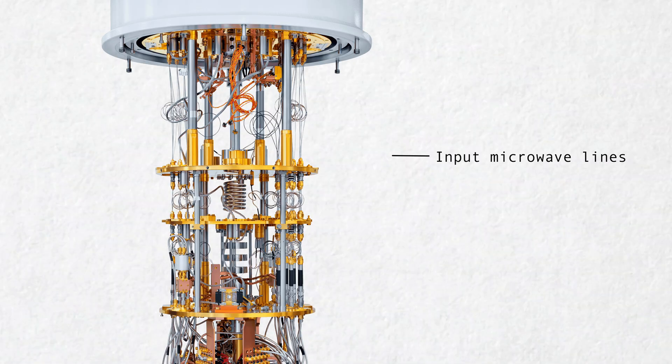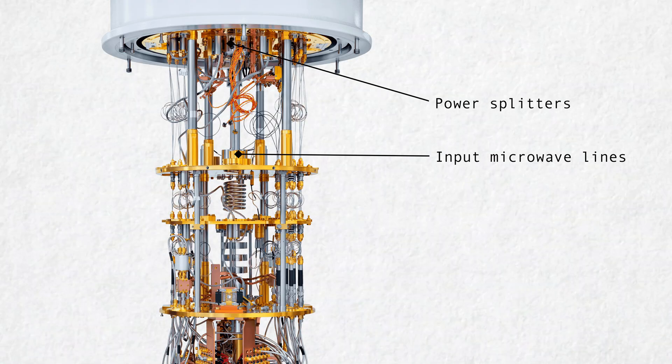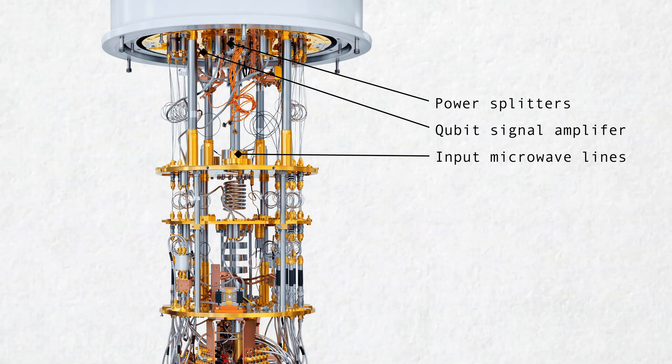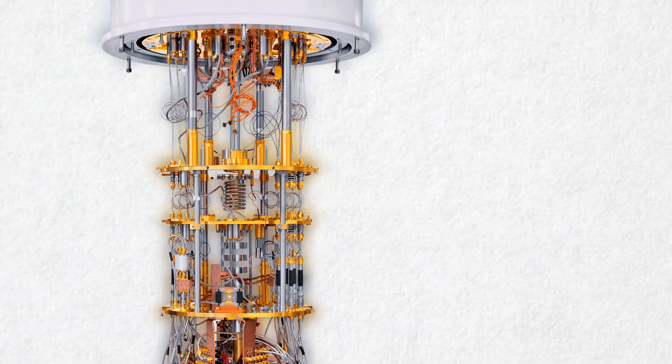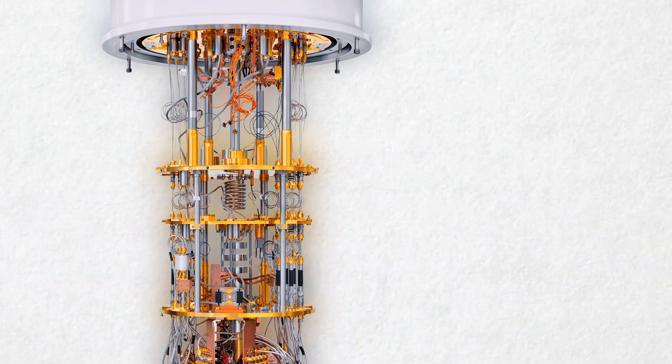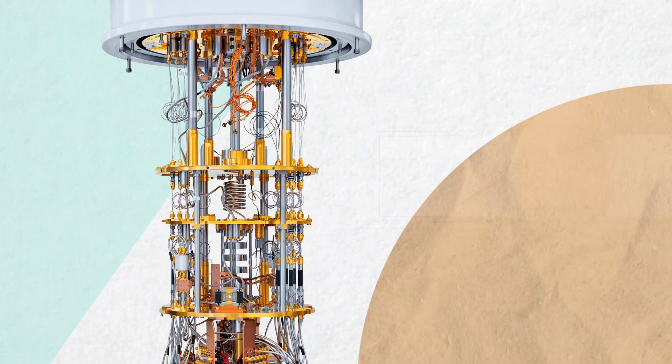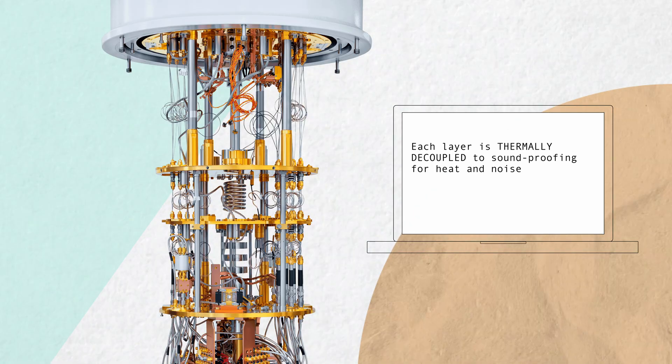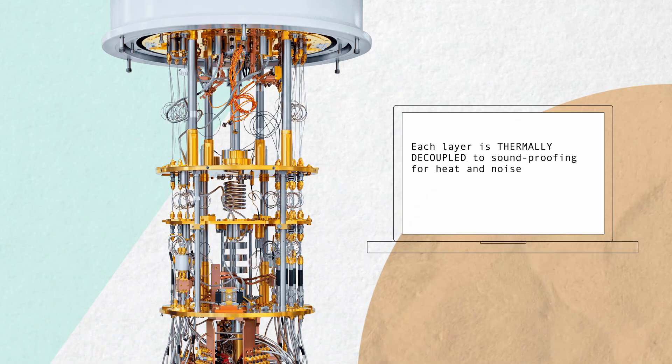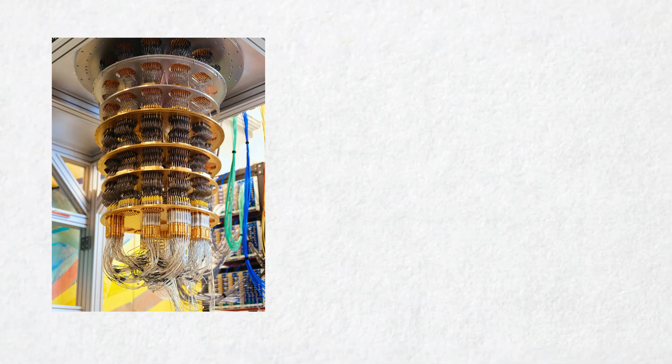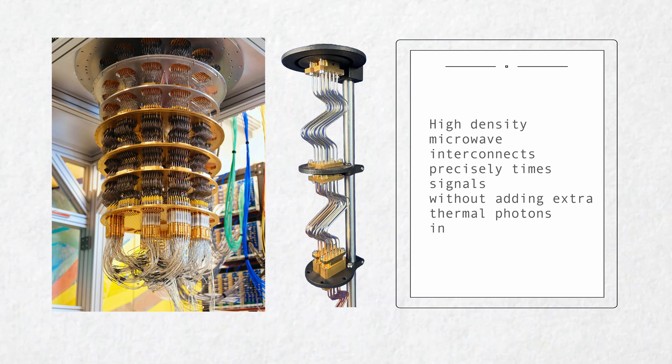Here you'll find microwave sources, power splitters, and the first amplifiers that shape and boost the pulses destined for your qubits. These components generate some heat, so they're thermally decoupled from the colder stages below by attenuators and filters. Think of them as soundproofing for heat and noise. Every microwave line is tested to make sure it brings in clear, precisely timed signals without adding extra thermal photons to the machine.